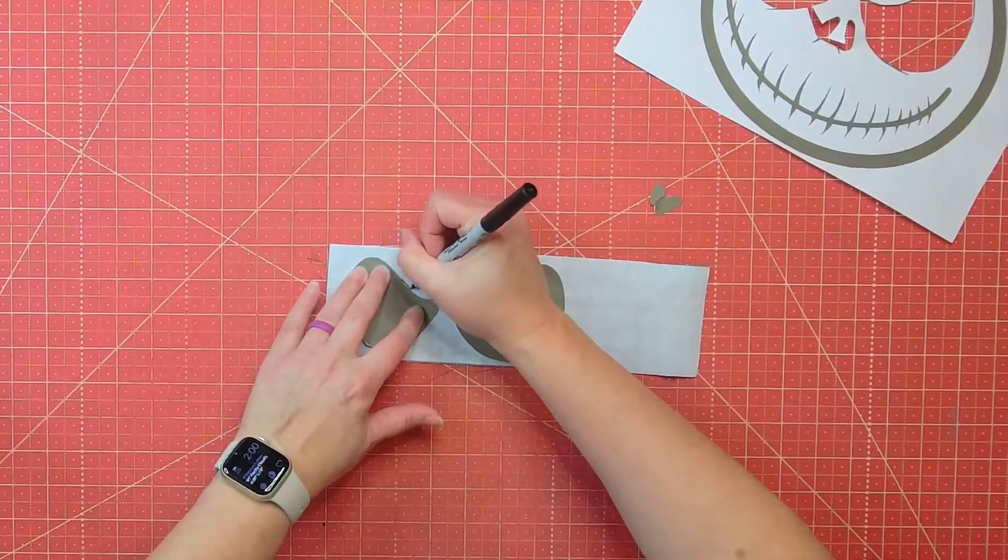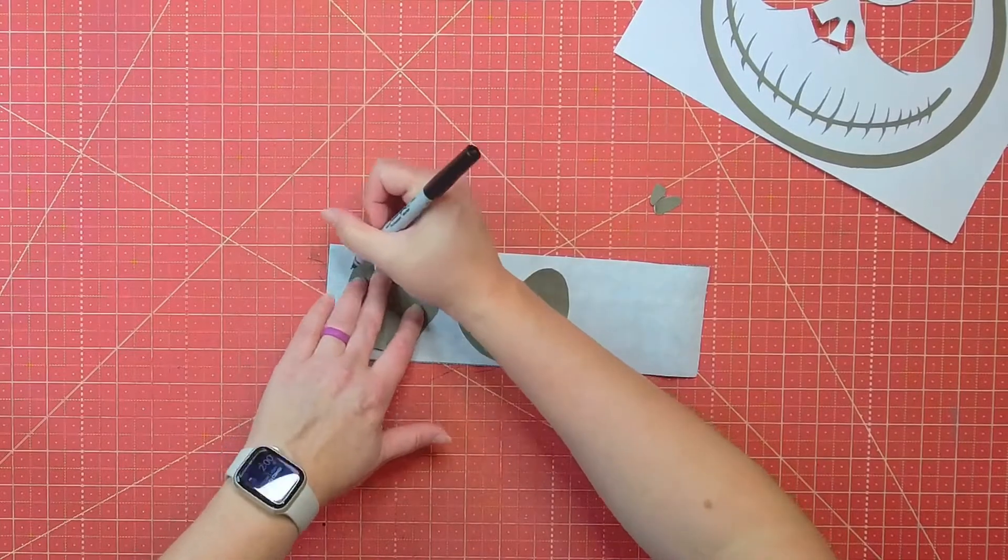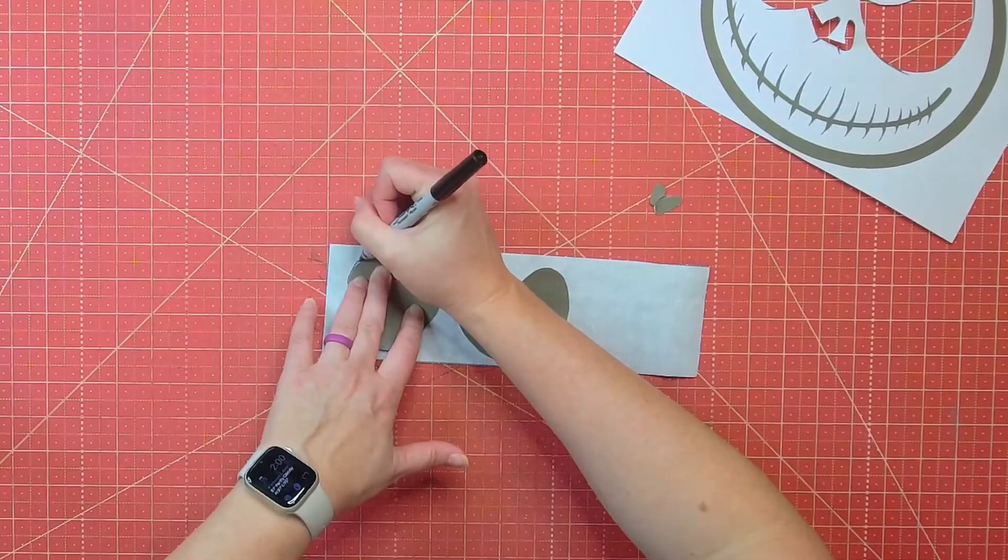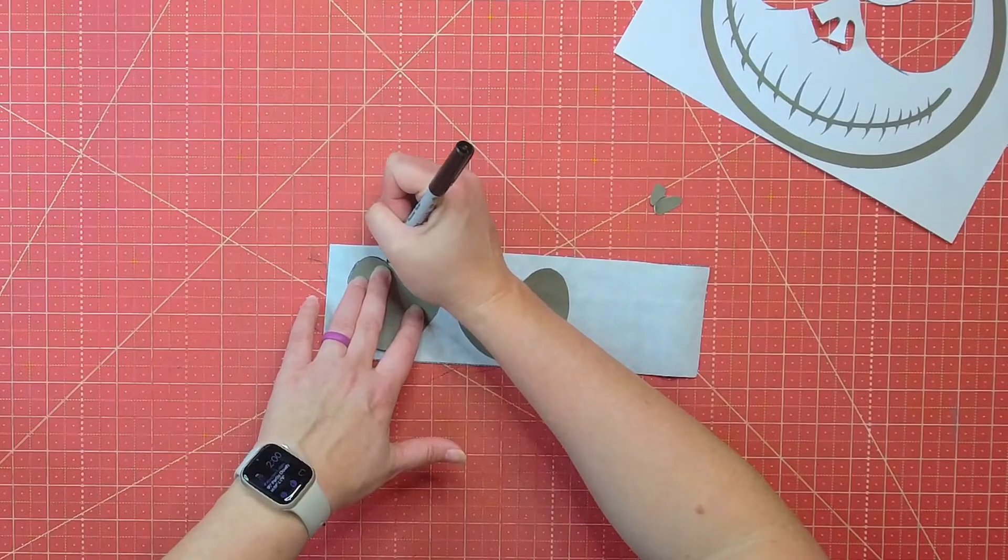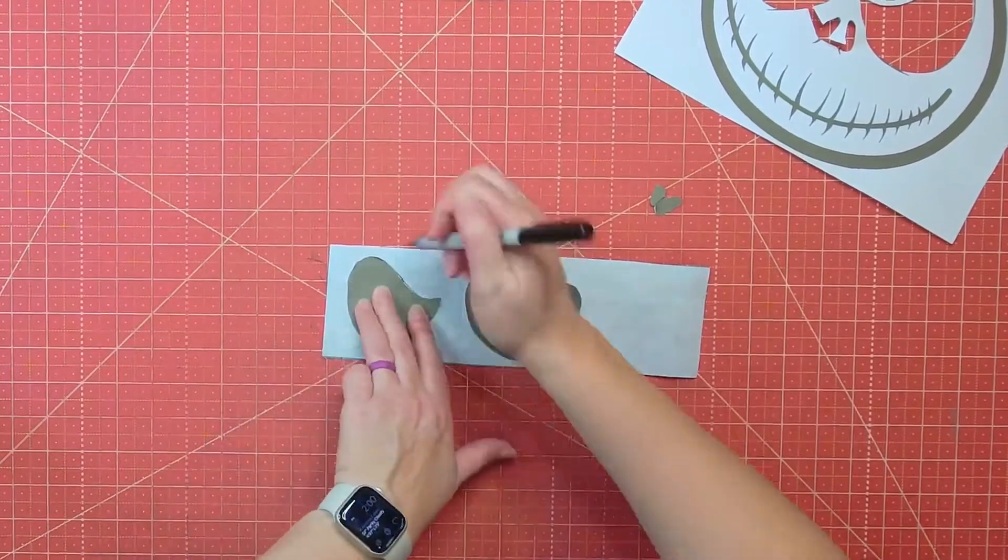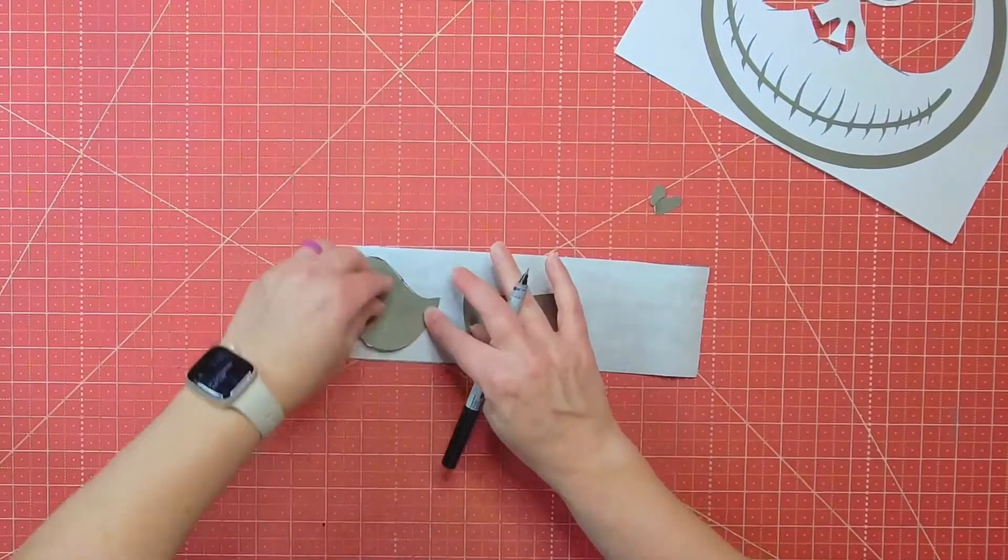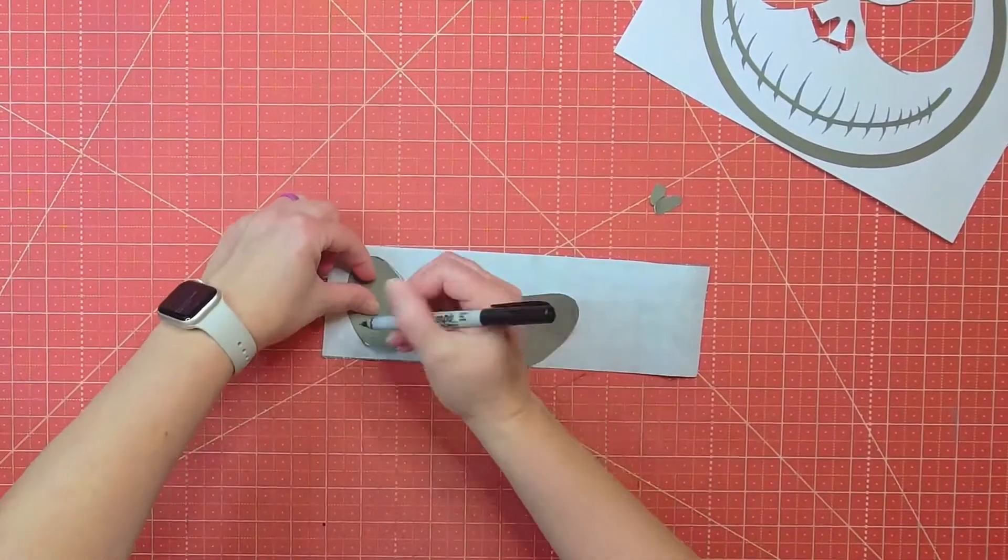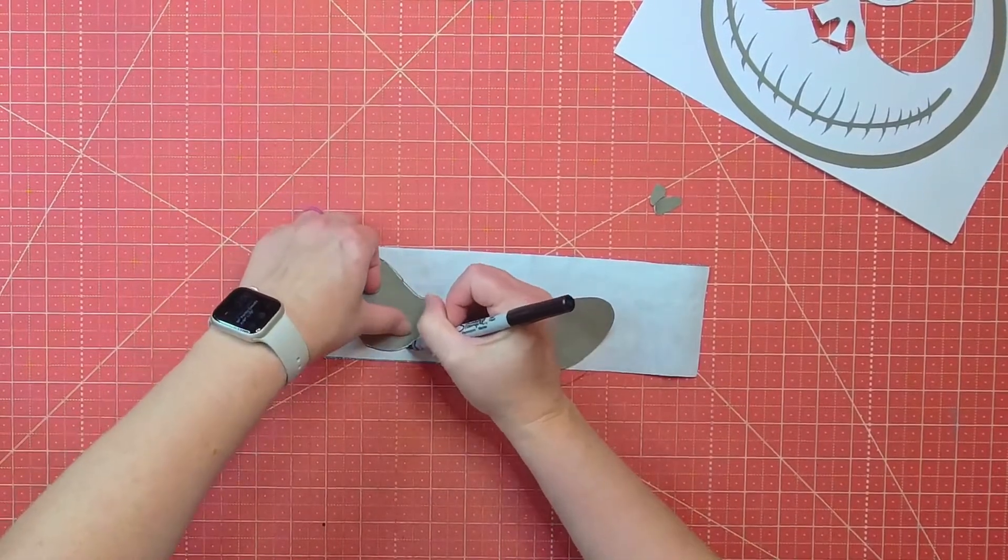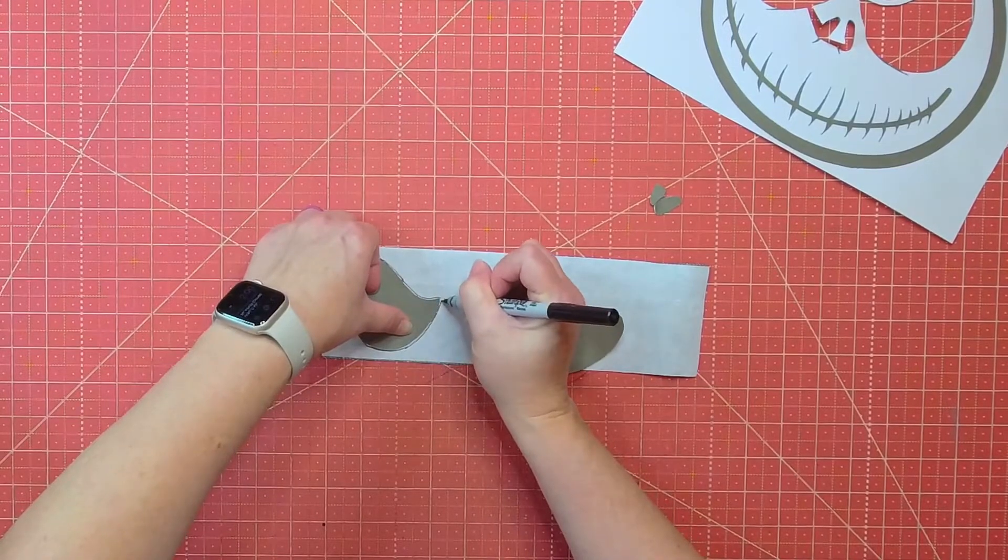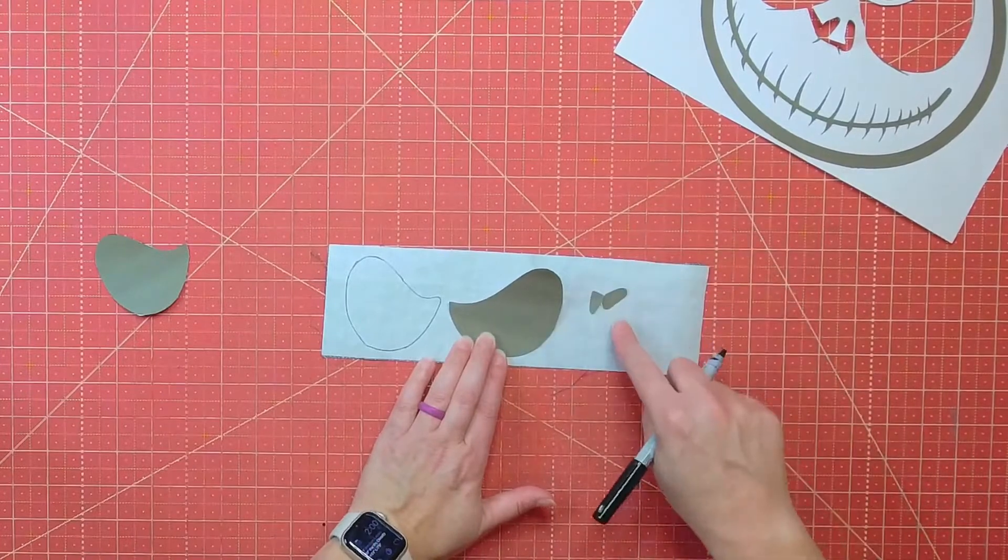All right. So now that I have all the pieces cut out, I'm just going to trace them onto the paper side of the heat and bond that I had already fused onto the backside of the fabric. So I'm just going to carefully trace around them. I have found that sometimes I'll use a ruler to hold it in place, or I have some pattern weights that I can put on here to trace them, but I can usually do this quick enough with these small pieces that it's not too big of a deal, but those are some ideas.